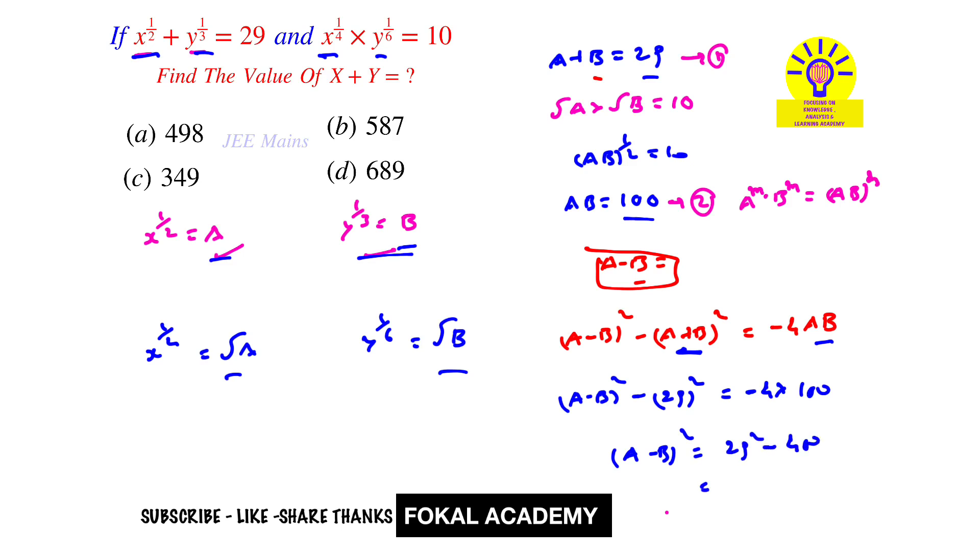From this, a minus b whole square equals 29 square minus 400, which equals 441. So from this we get a minus b equals root of 441, which is 21.